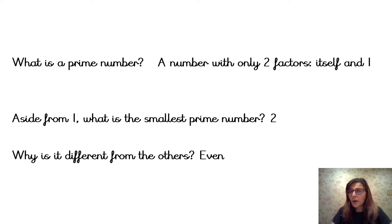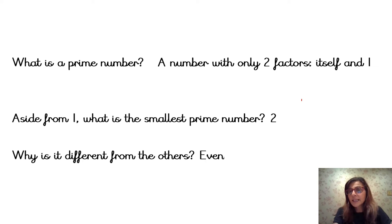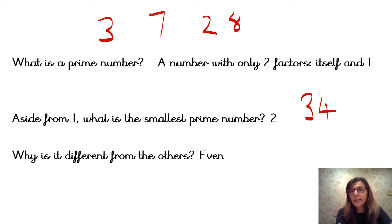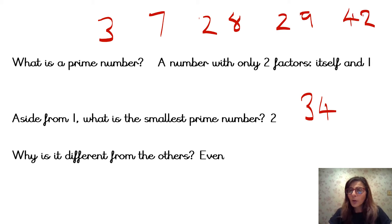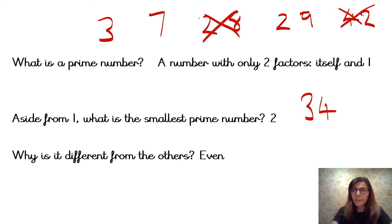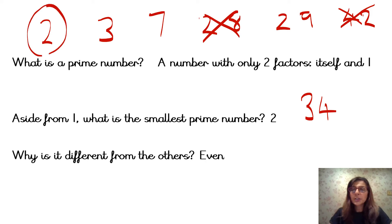So if you had a number higher than 2 and it was an even number, you would definitely say no, it's not a prime number, because it's even. So if somebody said is 34 a prime number — definitely not, because it is an even number. So if you were presented with 3, 7, 28, 29, and 42, straight away you could say which ones are definitely not prime numbers. 42 isn't, because it's an even number. 28 isn't, because it's an even number. The number 2 is a prime number and it's the only even prime number.